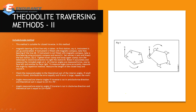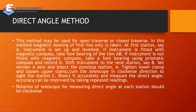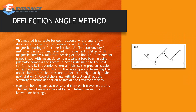Next, you can calculate the included angle using the formula 2n-4 × 90 degrees, depending on the number of sides. Then there is the direct angle method, which can be used for open traversing or closed traversing. In this method, you measure angles by rotation of the telescope over the station in a clockwise direction.